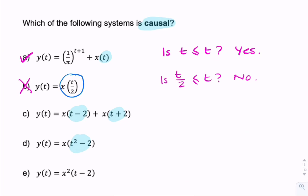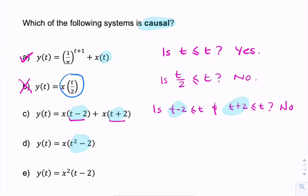Next: t minus 2 is always less than t — that's obvious. But t plus 2 isn't. So we ask: is both t minus 2 less than or equal to t, and t plus 2 less than or equal to t? The answer is no, because one of these isn't true. It doesn't matter that one is — as long as one isn't, then it's a non-causal system.